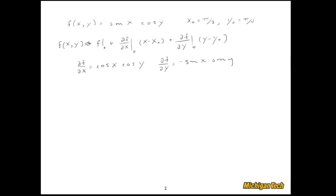Now I'm just about done. So f(x, y) is approximately equal to sine x0 cosine y0, that's our first term right there, plus cosine x0 cosine y0 times (x minus x0), that's that term.